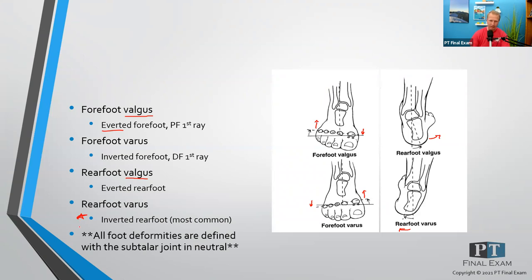It is important to define our terms here. When we're talking about forefoot valgus, varus and rear foot valgus, varus, we're talking about positions of the foot — the rear foot and the forefoot — all while the subtalar joint is in the neutral position. That just means at rest, non-weight bearing, open kinetic chain, with the leg resting off the edge of the table. These are deformities — anatomic anomalies where you'd see the calcaneus is too far in, the calcaneus is too far out, or the forefoot has a first ray that's too high or too low.